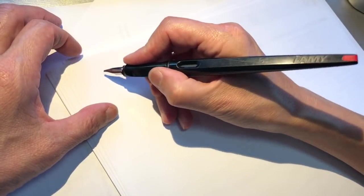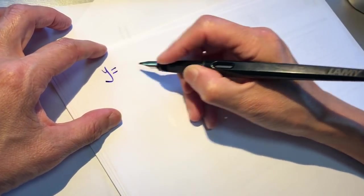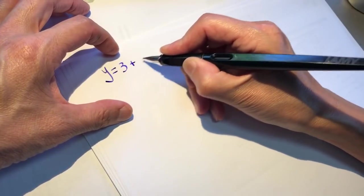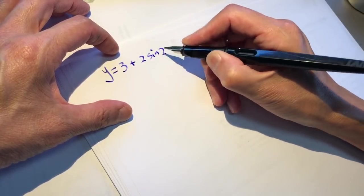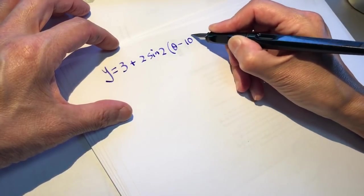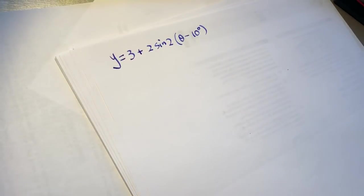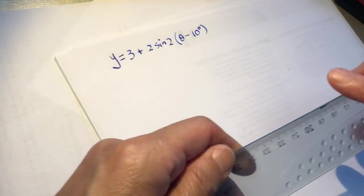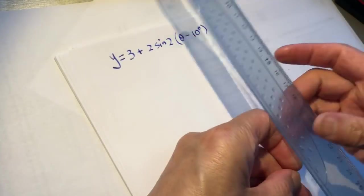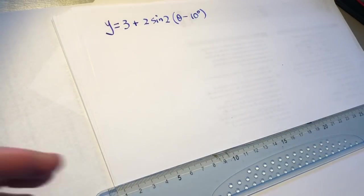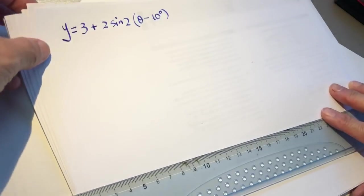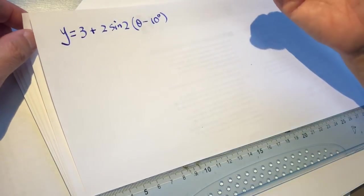Hello dear friends, let's do a math problem. We need to draw a trigonometry graph: y equals 3 plus 2 sine 2 theta minus 10 degrees. Last night when I saw this problem I was immediately blacked out and could not process it, but then I started to think and slowly my conscious regained and I could do this problem.